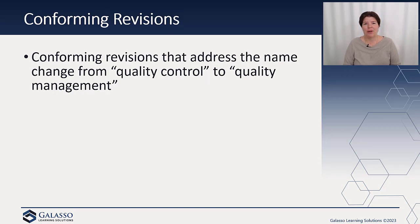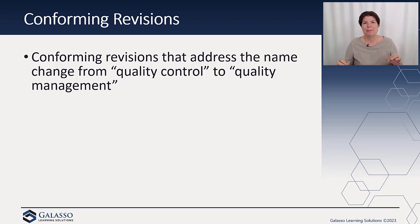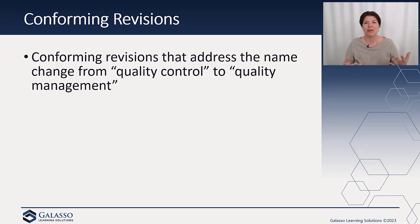Last but not least, they don't want to have to list every instance where they change the words 'quality control' to 'quality management' throughout the entire document, so there will just be conforming revisions. This is similar to what we saw with Yellow Book — rather than putting all those changes out for proposal, it's essentially a find, copy, replace. The entire document will move to 'quality management' throughout.